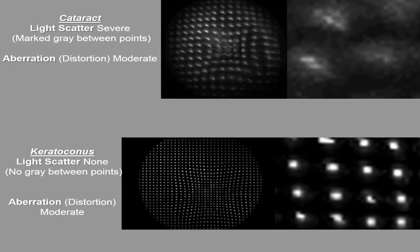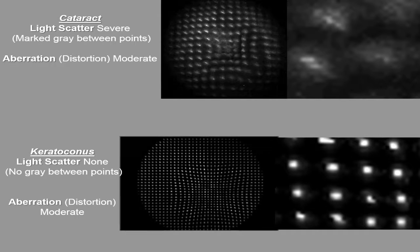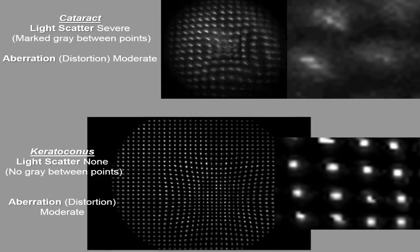One way to understand the difference between wavefront and light scatter is to picture the device that measures wavefront — the one that shows little dots in an array. We have a grid of dots, and a wavefront analyzer takes a picture of those dots through the optical system. If those dots are not exactly as they were in the original grid — if they're compressed, distorted, or moved — that's what we call wavefront, and it is a measure of optical quality. But light scatter is something else.